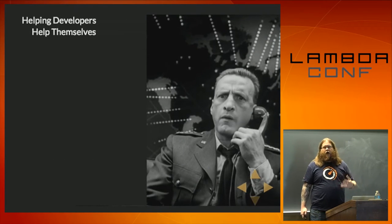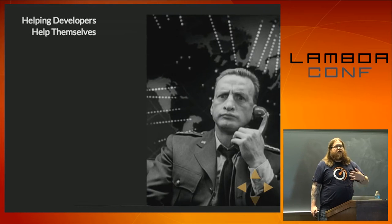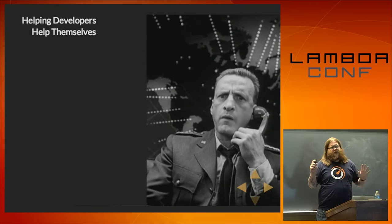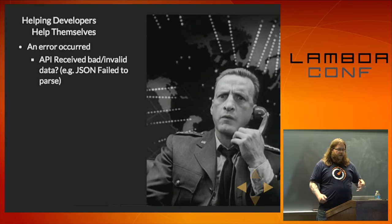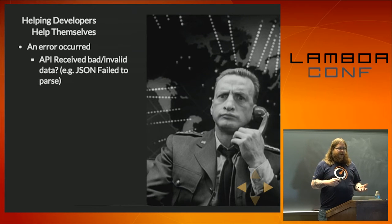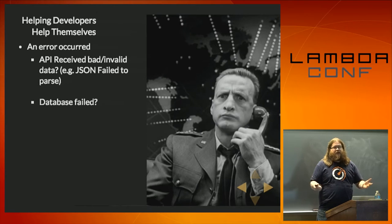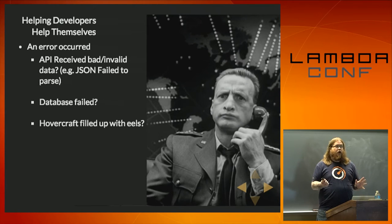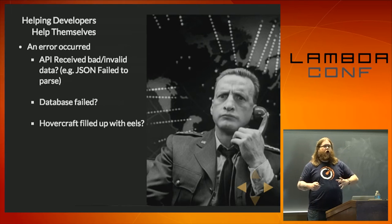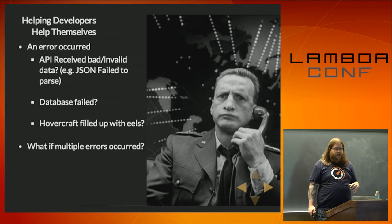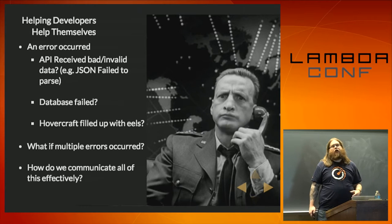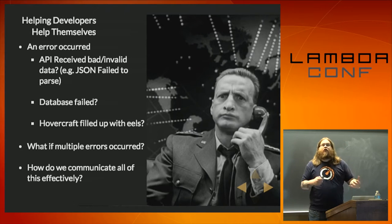The idea was to help developers help themselves and to stop having to dig through log files. If an error occurred, the questions are: did the API receive bad data, did it receive invalid data such as the JSON failed to parse, did the database fail, did your hovercraft fill up with eels or some other ridiculous error? And what if multiple errors occur? How do we communicate all of this effectively — do we give clear information or do we make them dig through log files?